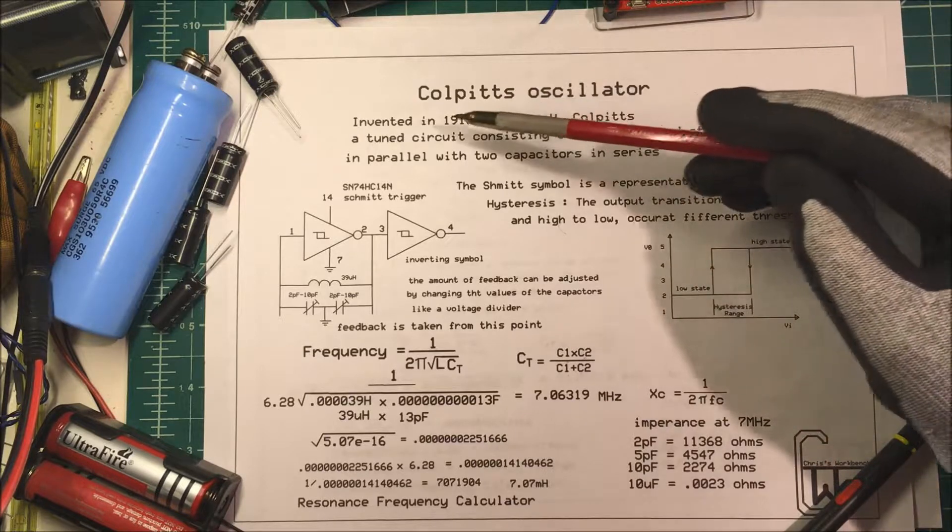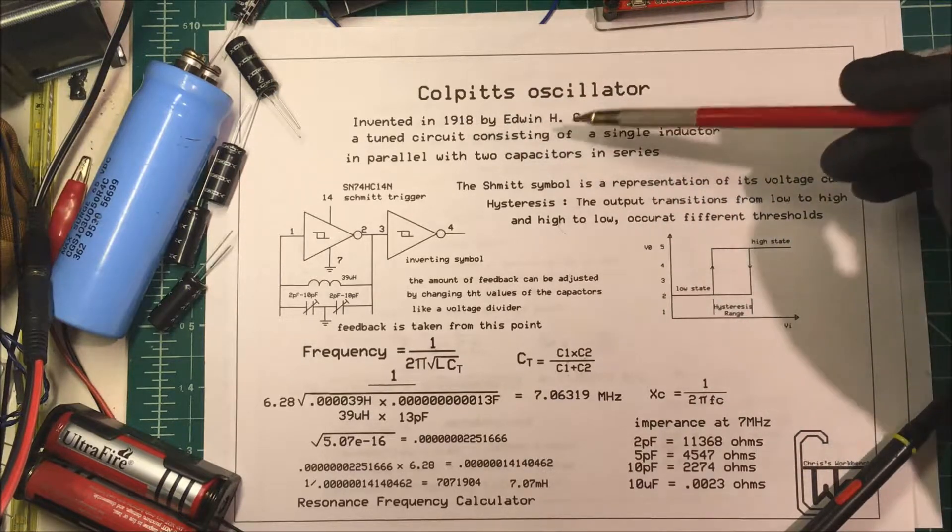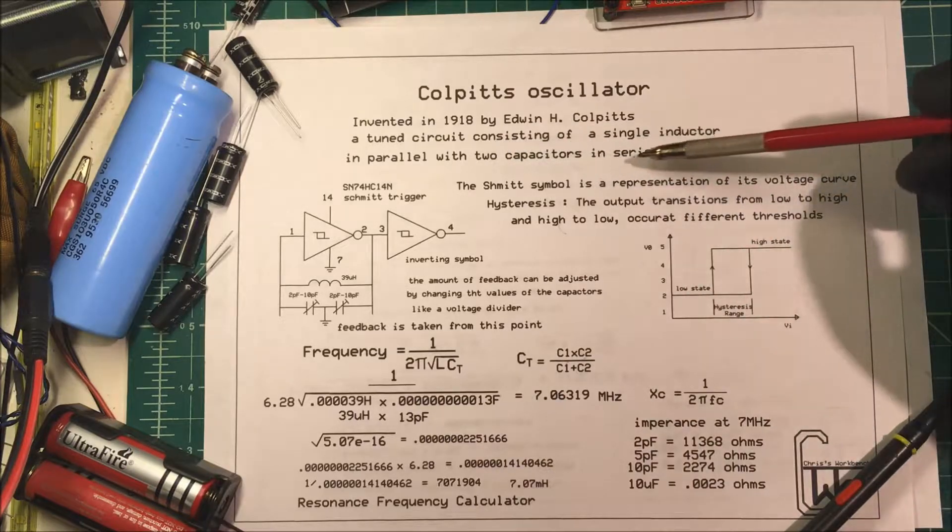Let's talk about the Colpitts Oscillator, invented in 1918 by Edwin H. Colpitts. It's a tuned circuit consisting of a single inductor in parallel with two capacitors in series.